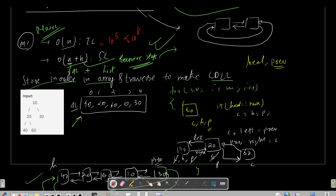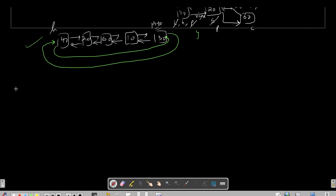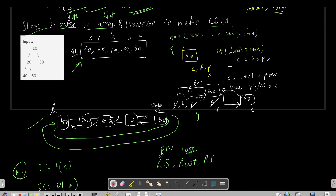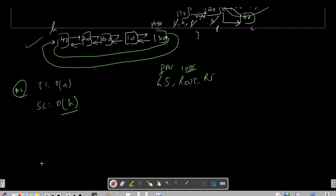Method 2: instead of storing the inorder nodes in a separate list, while traversing we maintain a previous pointer and point it to the current node. In inorder traversal — left subtree, root, right subtree — the root will be the current pointer and the processed left subtree result becomes the previous pointer, then we do current.left = previous and previous.right = current.